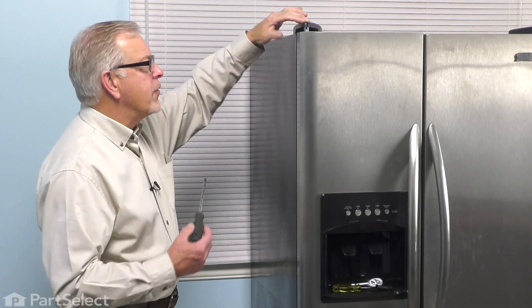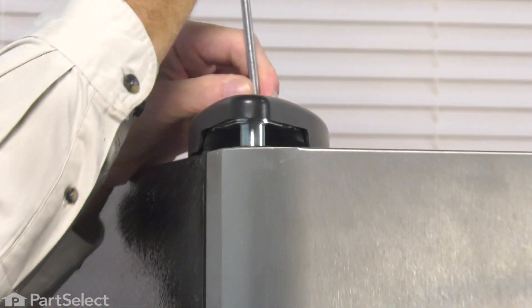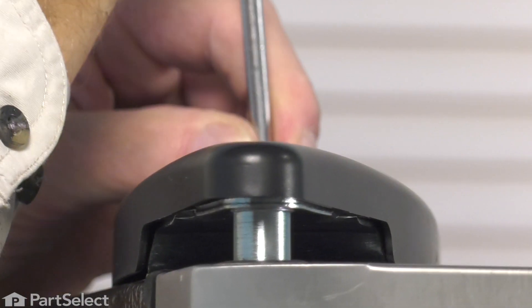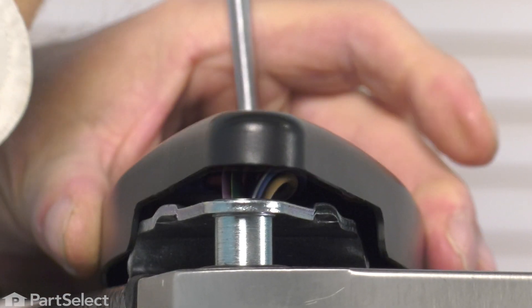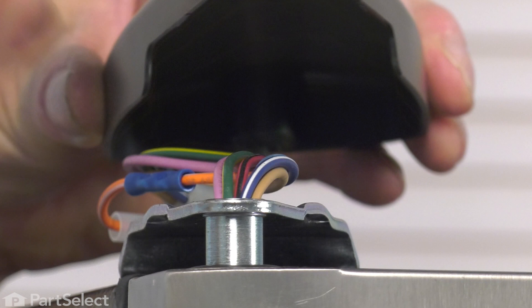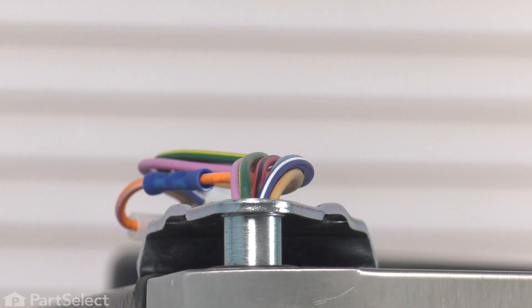We'll begin by removing the hinge cover. It's typically held in place with a single Philips head screw at the back. Just remove the screw and the cover and set those aside.